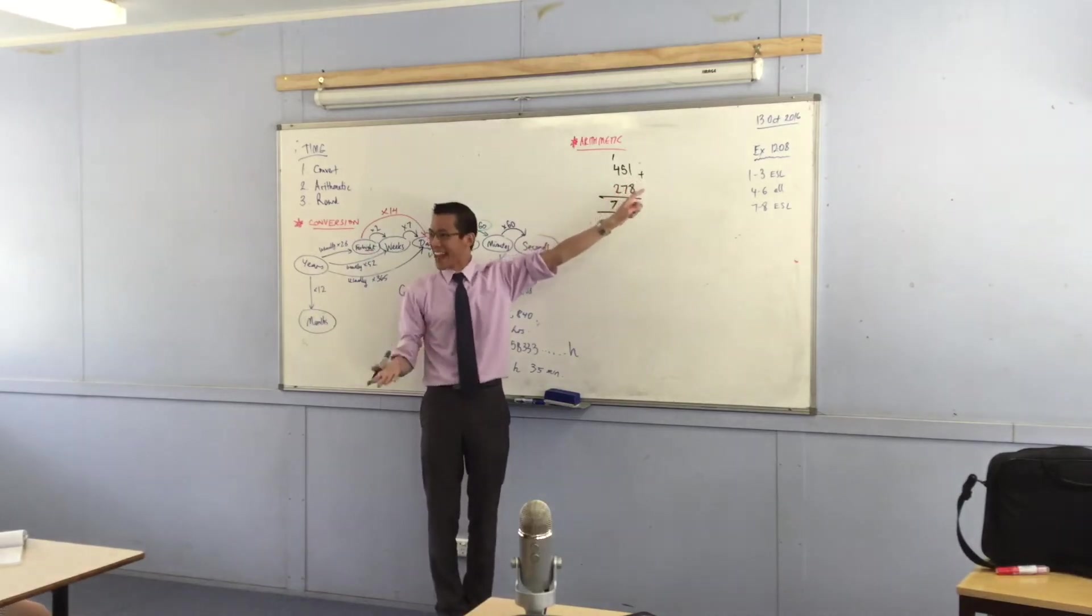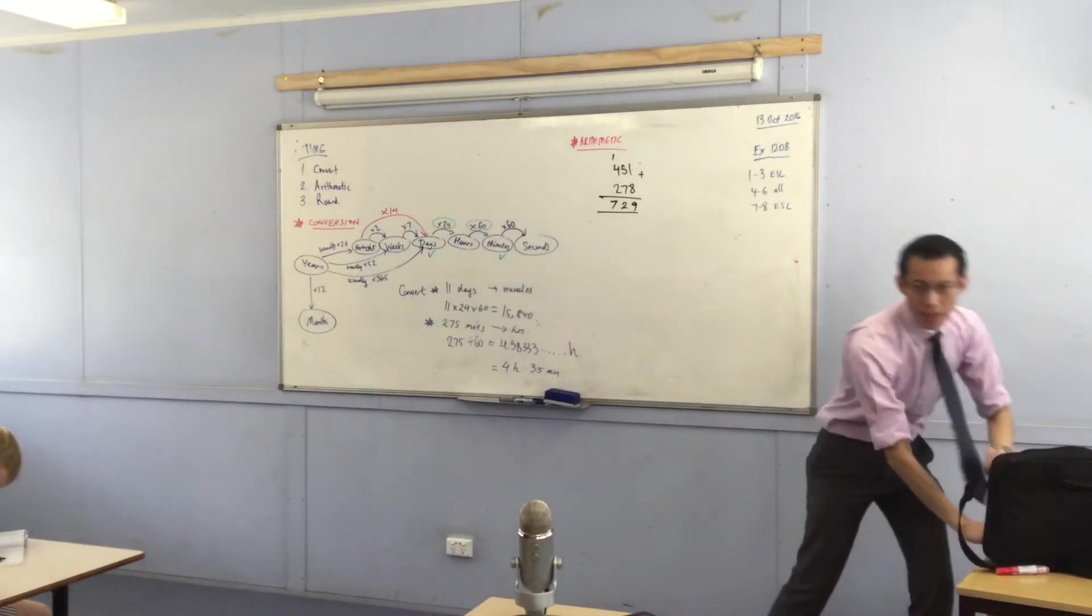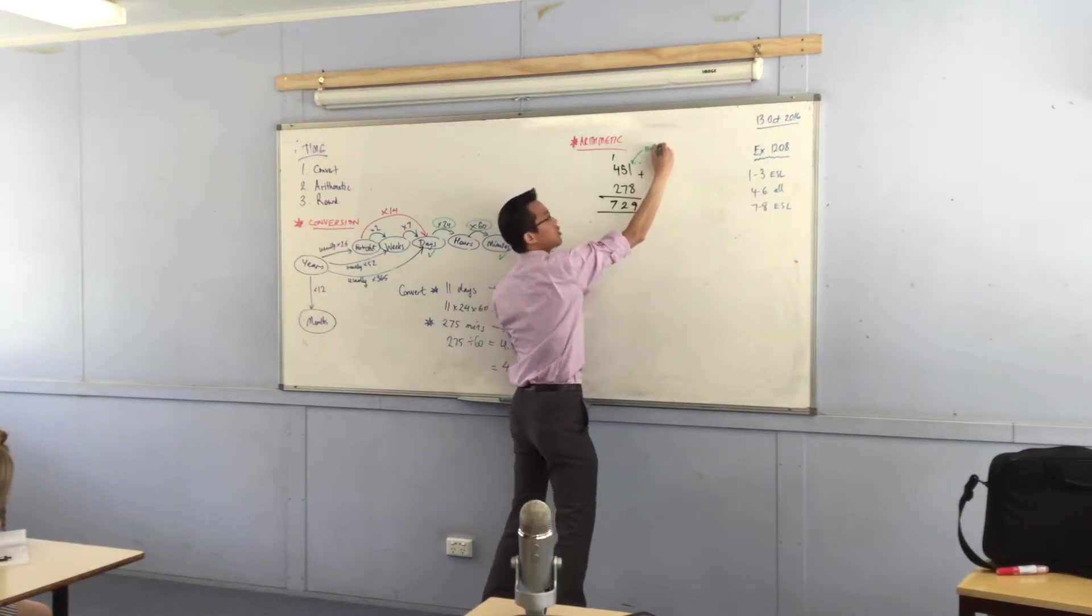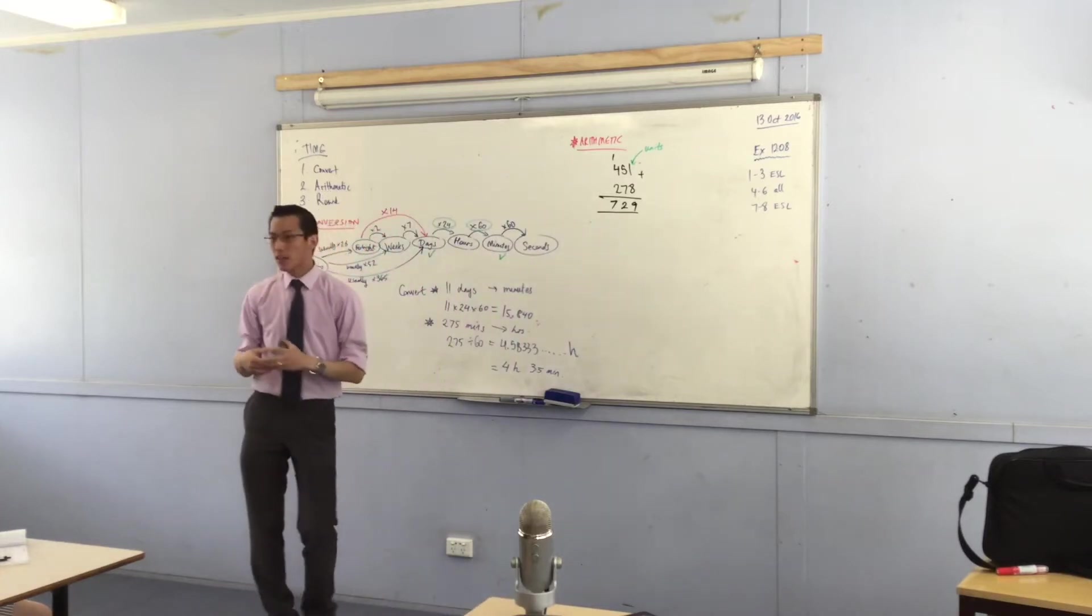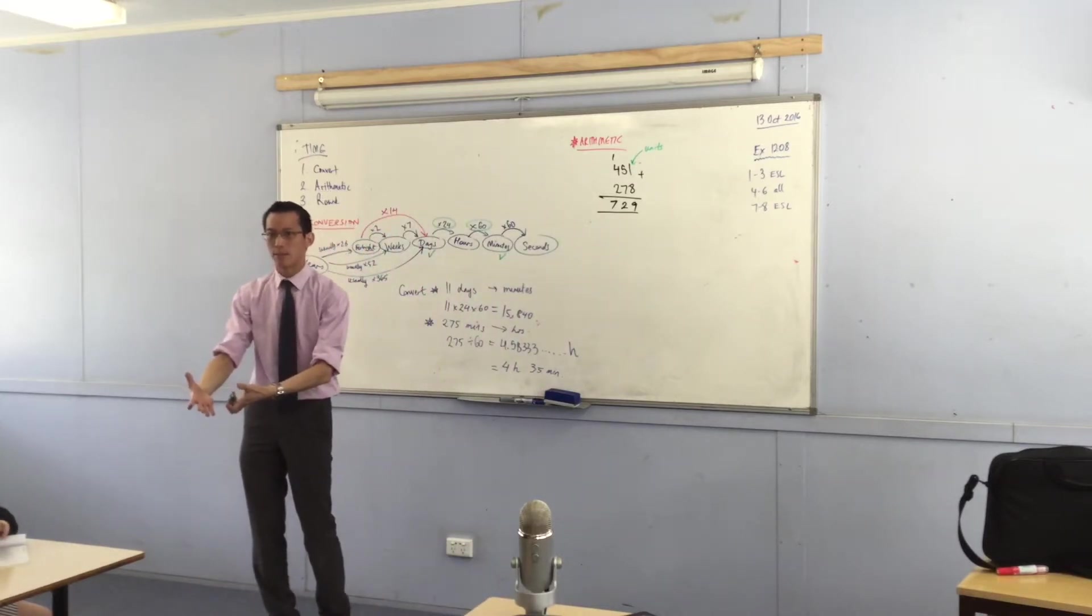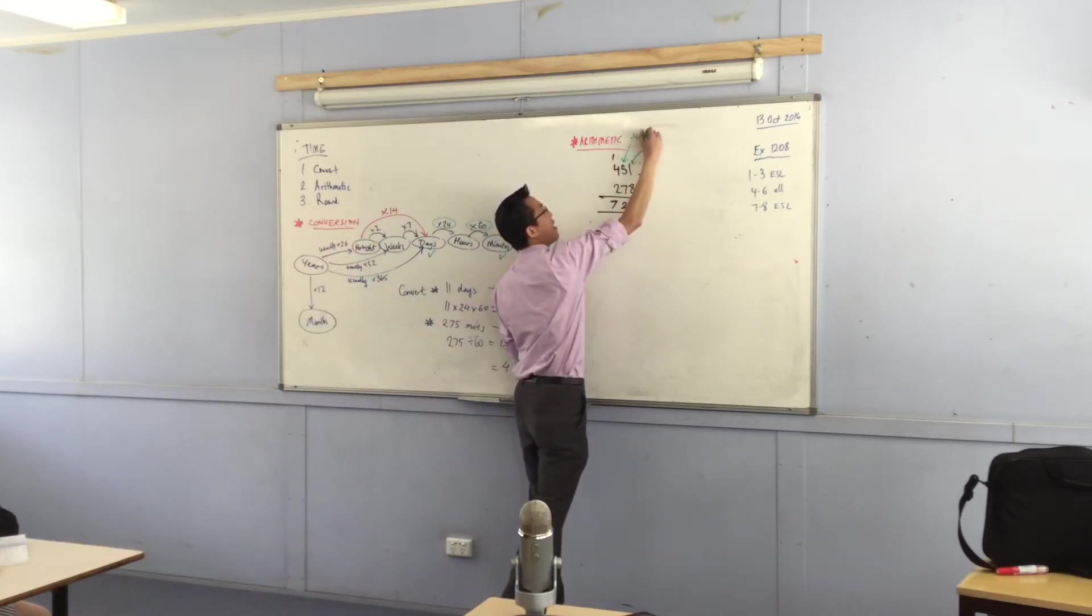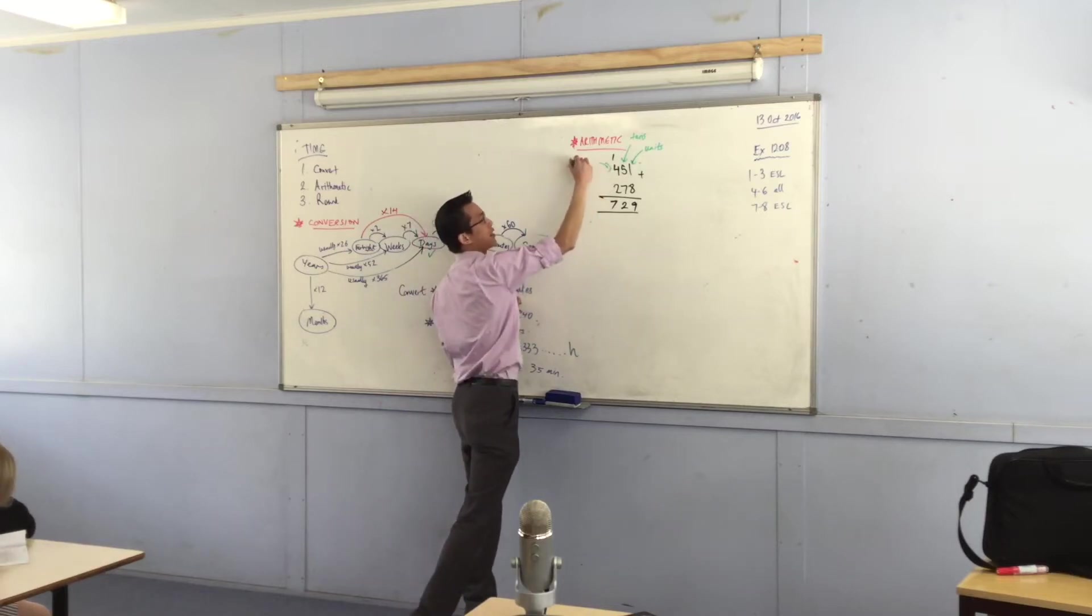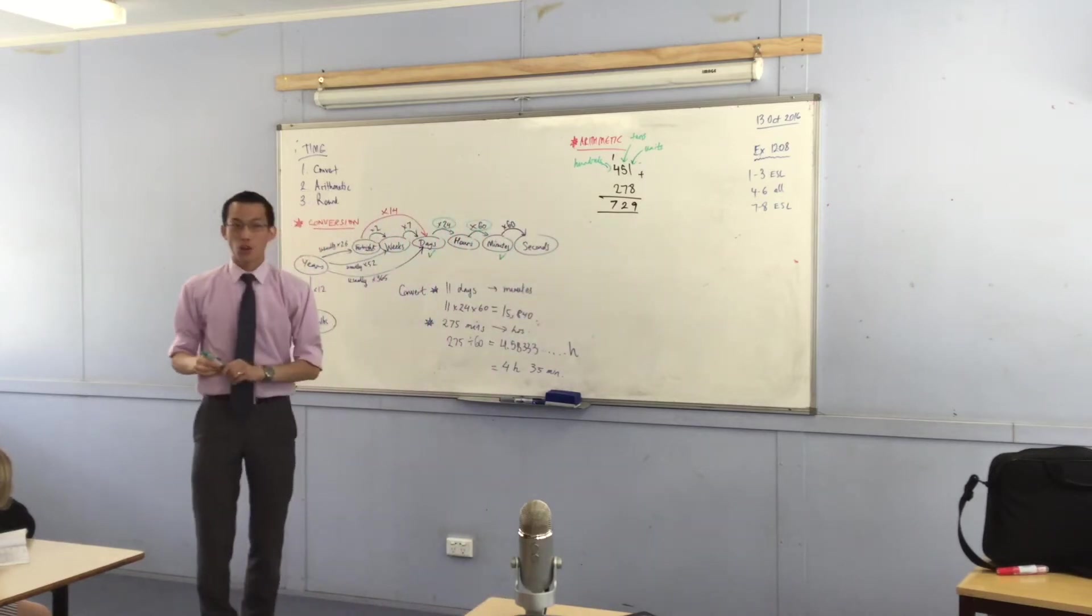You told me to add the 1 and the 8. Those guys, those 1s and the 8s, they have a name. We call these guys the units. And then you added the 5 and the 7, also has a name. What are those called? Tens. And then lastly, you added the hundreds. And if I had a bit bigger numbers, you could obviously add the thousands or the ten thousands.